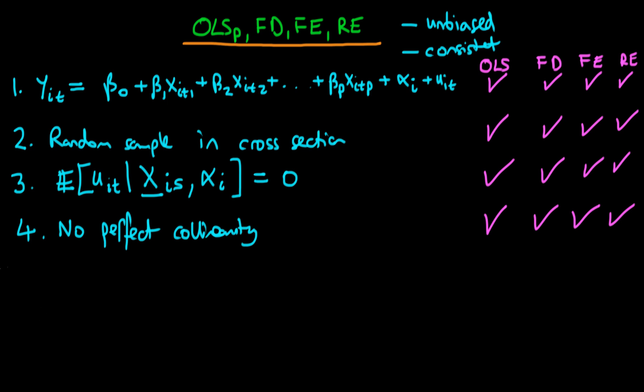Okay, so when we come to the fifth assumption, our fifth assumption is the fact that we must have some time variation in our explanatory variables. This is where we are going to see some sort of difference between these different estimators in terms of what are actually required or whether this assumption is required for each of these different estimators rather.